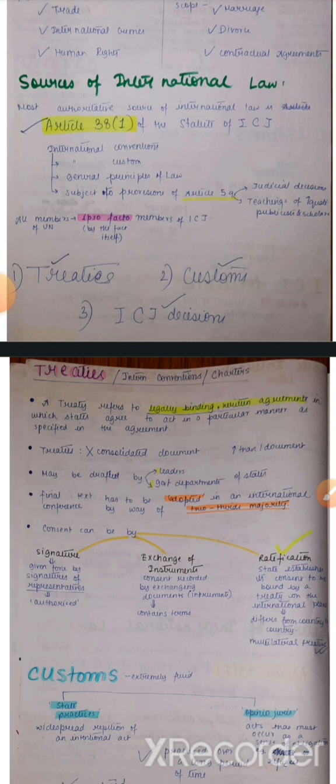Within Article 38(1), there are three things: international custom, evidence of general practice; general principles of law as recognized by civilized nations in treaties; and third, judicial decisions and teachings of highly qualified publicists and scholars.